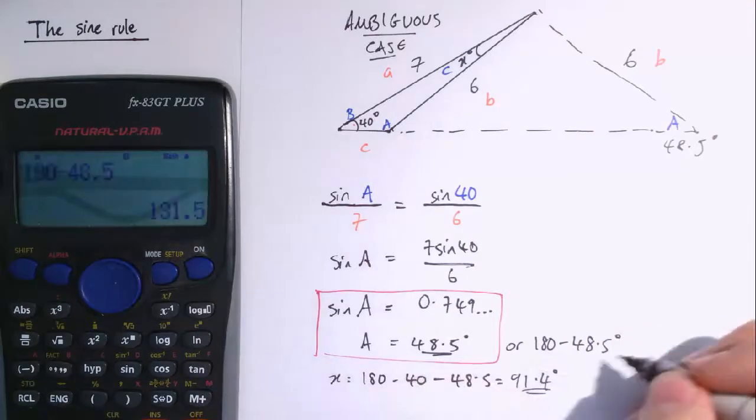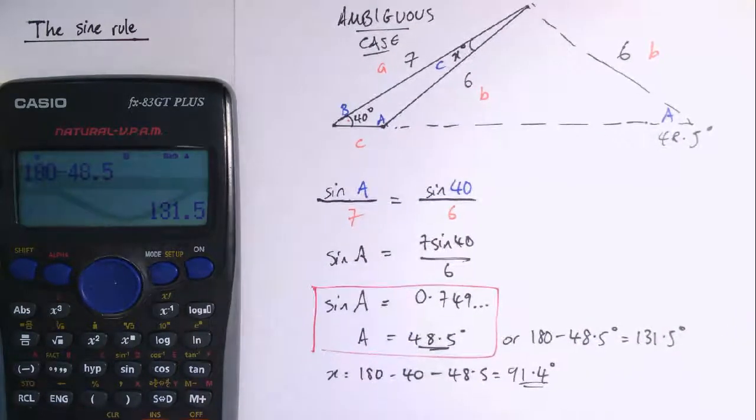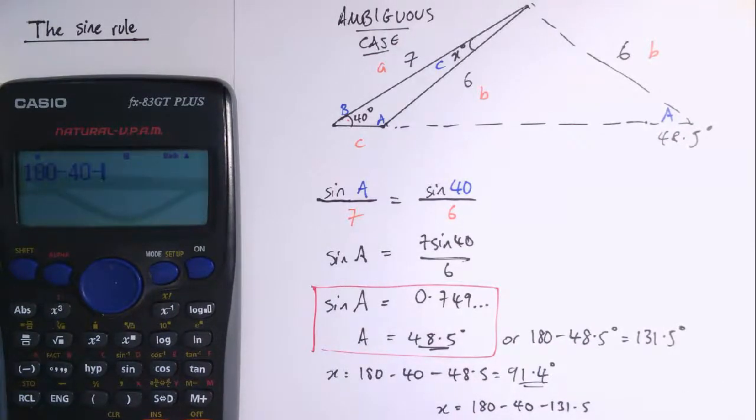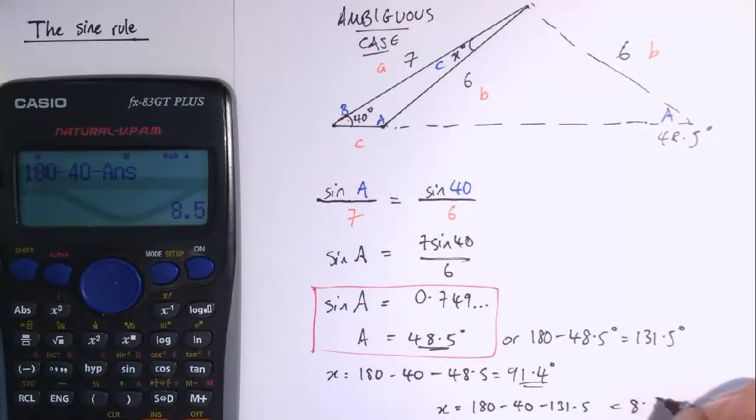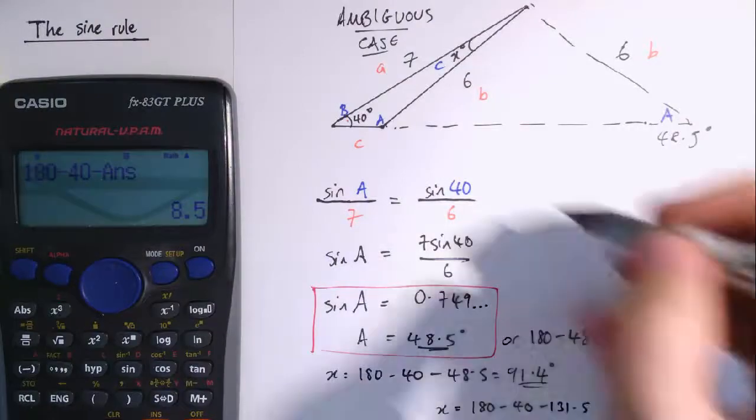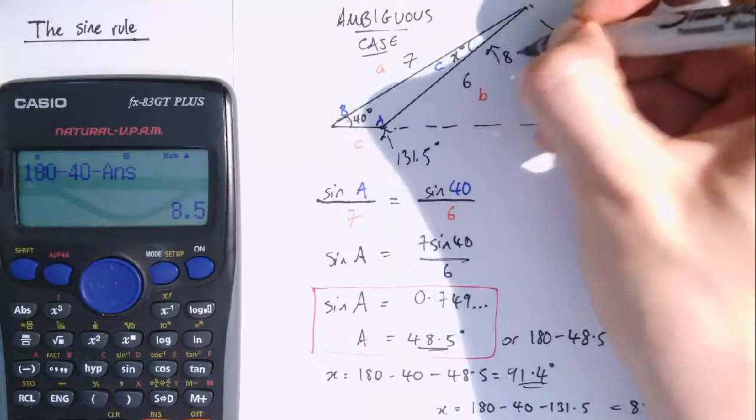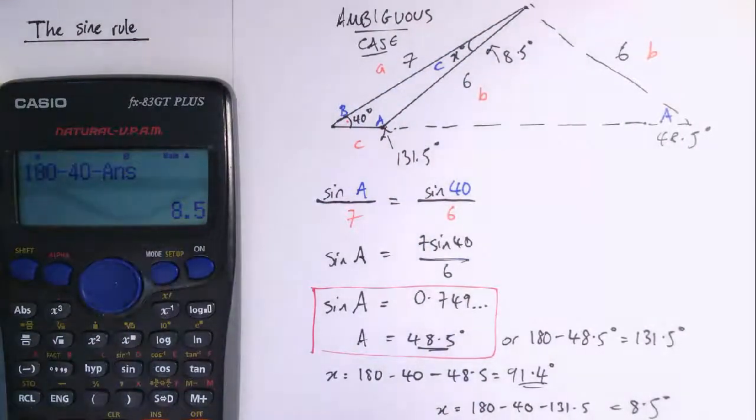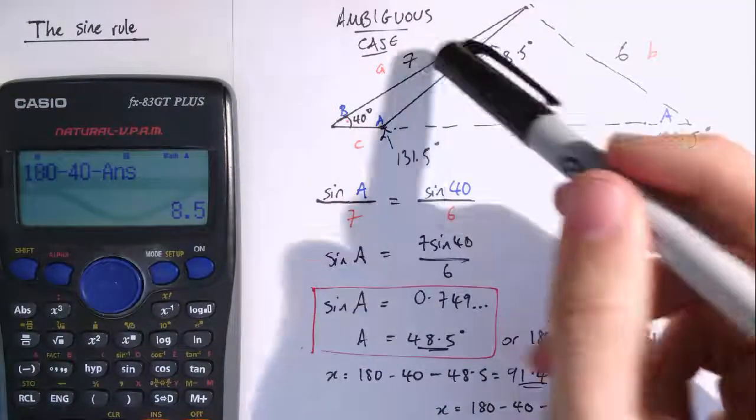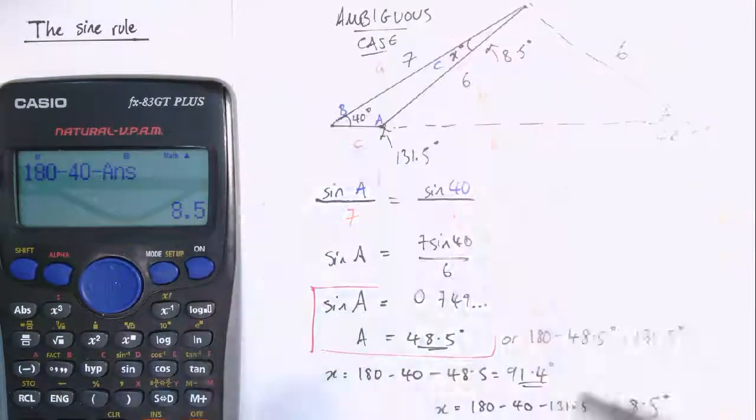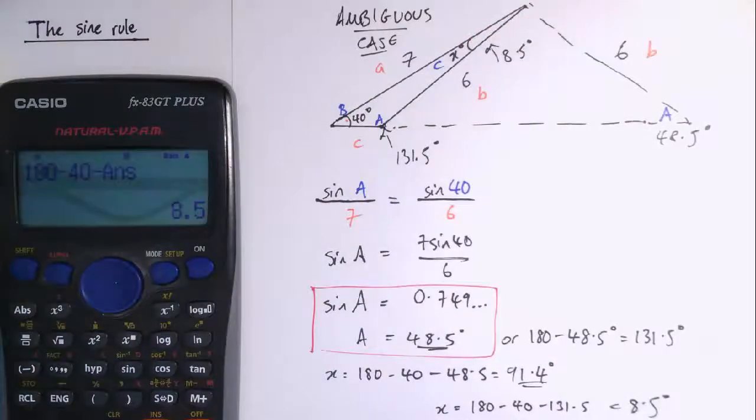And that would mean the corresponding value of X would be 180 minus 40 minus 131.5, which gives us 8.5 degrees, and now that looks much more like it satisfies the initial problem. We've got the angle in here of 131.5 degrees, and this angle up here of 8.5 degrees. So, you've just got to be aware that in some cases where you've got two sides and a non-included angle, this ambiguity wouldn't arise if we knew, if we were given the angle X here, but when we've got two sides and an angle that's not included, that it can be the case depending on the lengths that we get two possible answers.